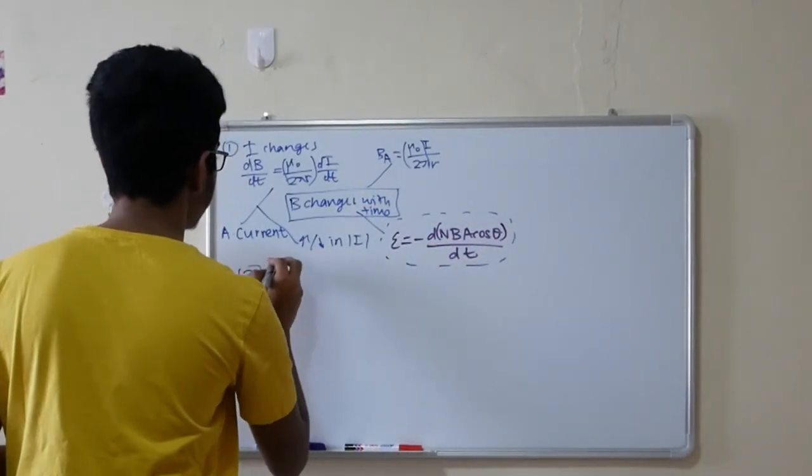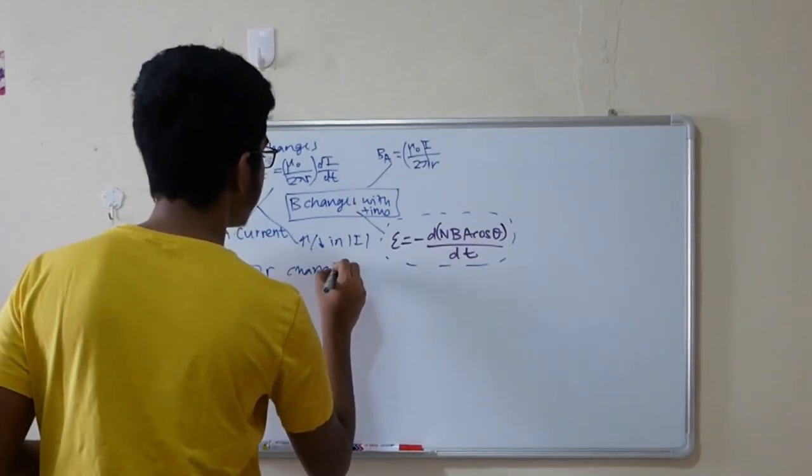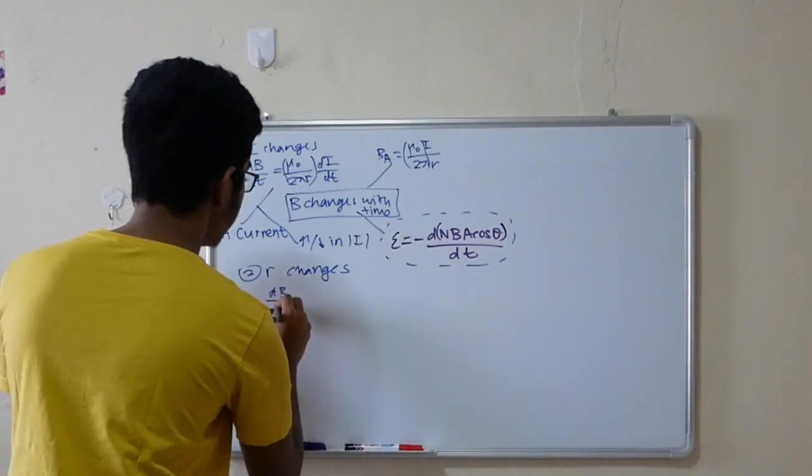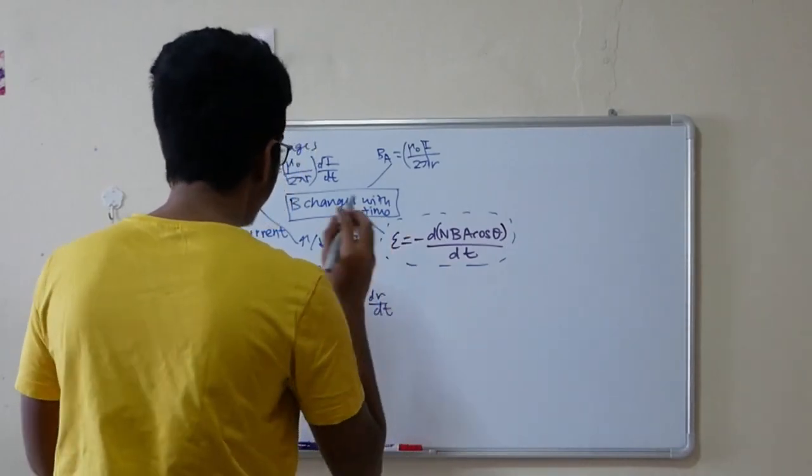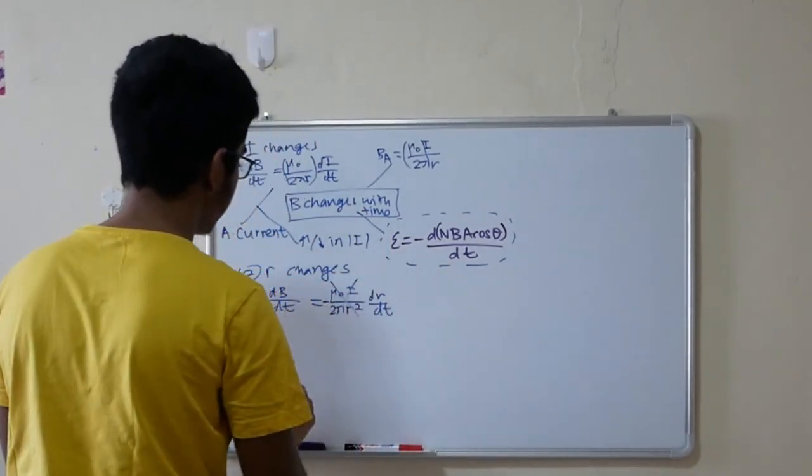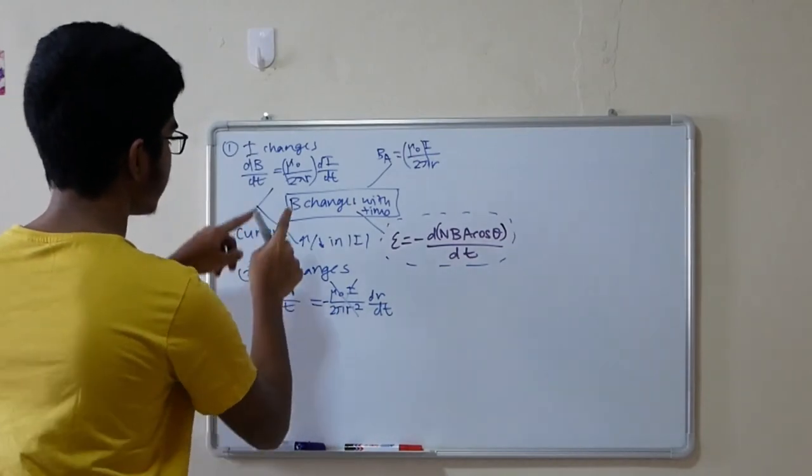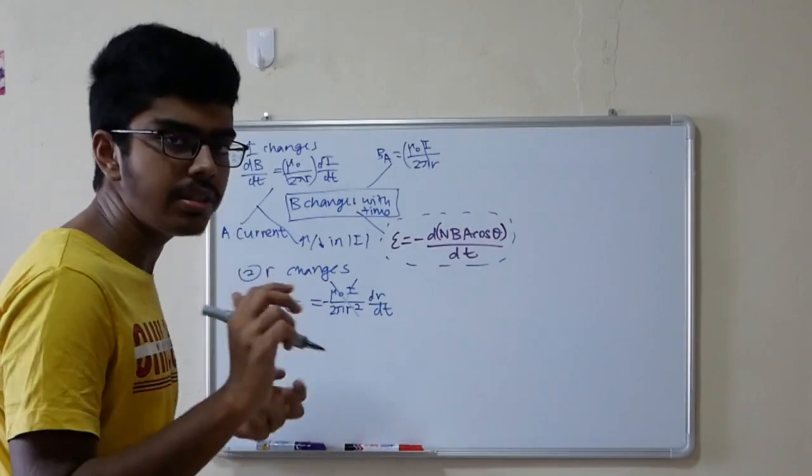Now, what is the second case? Second case is R changes. This one is a bit more complicated because this is the denominator. But the main thing you need to take note is that when there's a change in the radius, there's a change in B. Thus, a change in this equation which generates an EMF.